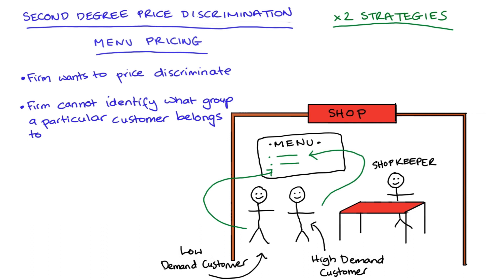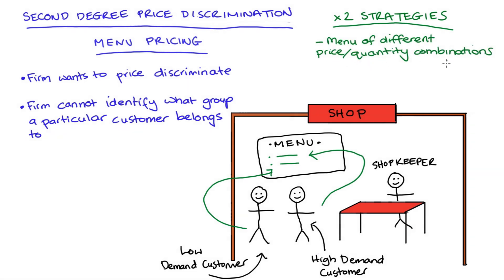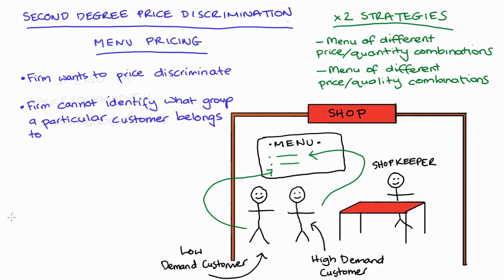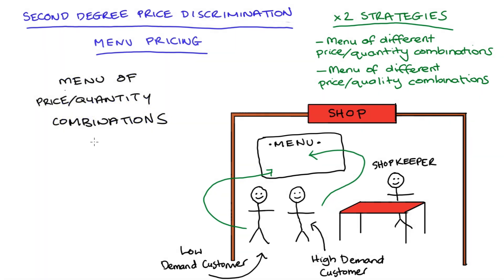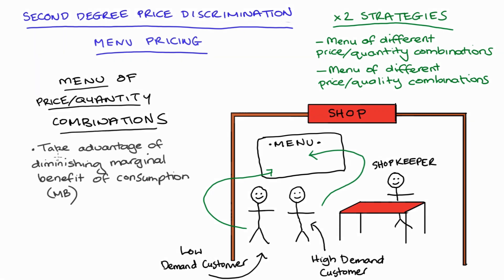The first strategy is when the firm offers a menu that includes different price-quantity combinations. The second strategy is when the firm offers a menu that includes different price-quality combinations. One way of understanding the first type — offering different price-quantity combinations — is that the firm is going to take advantage of the fact that the marginal benefit of consumption (MB) decreases, it diminishes, as our consumer consumes more.